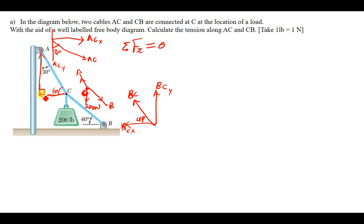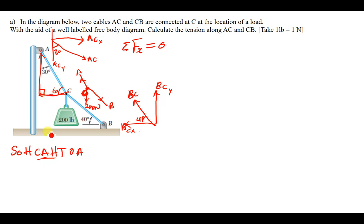The x-component of AC is the adjacent side, and AC is the hypotenuse. Using SOH-CAH-TOA, when you have the adjacent and the hypotenuse you use cosine. So: cos 60 = (AC in x) / AC. Cross-multiplying gives AC in x = AC × cos 60.